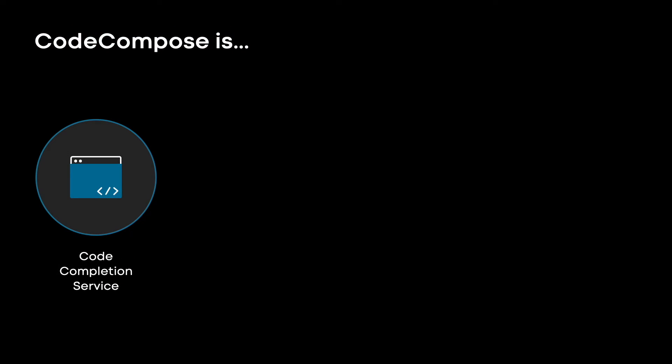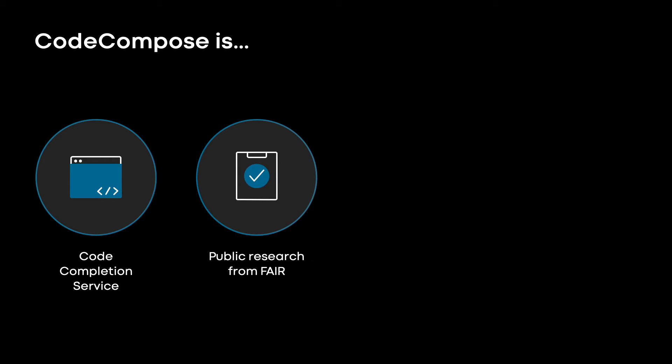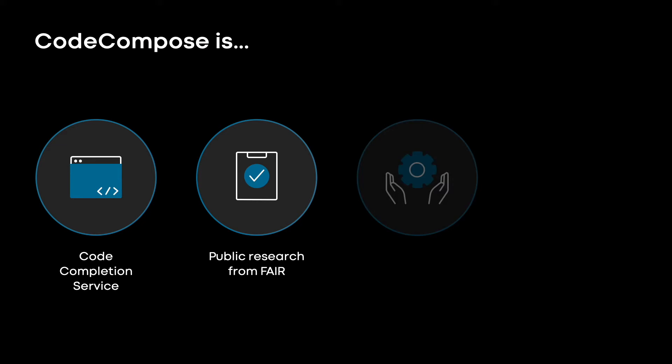Code Compose is a code completion service that suggests code as you type in an editor such as VS Code. The underlying model is built on top of public research from FAIR that we have tuned for our internal use cases and code bases.